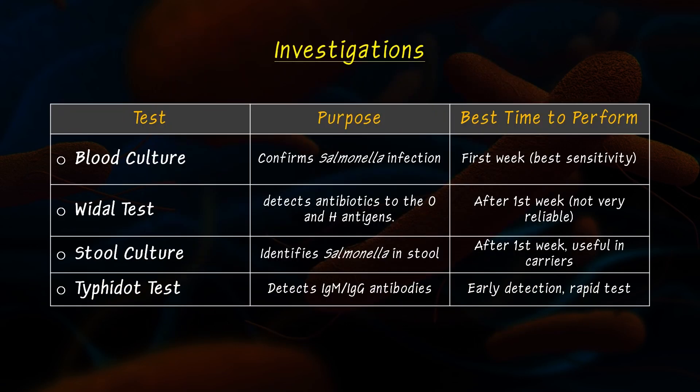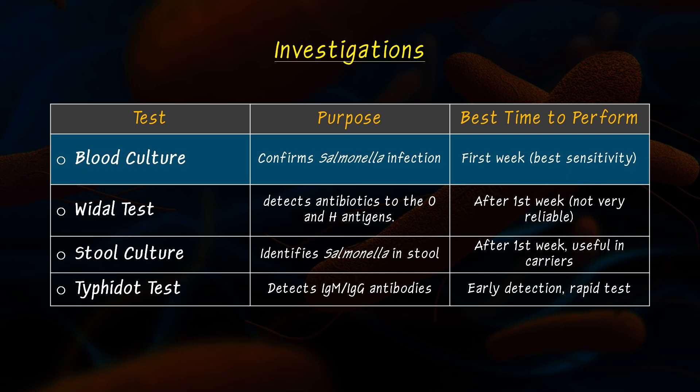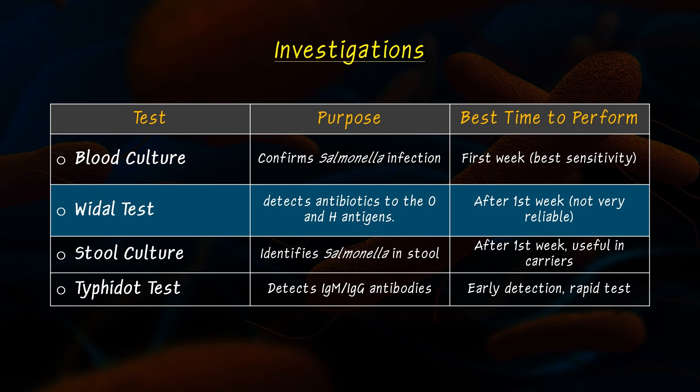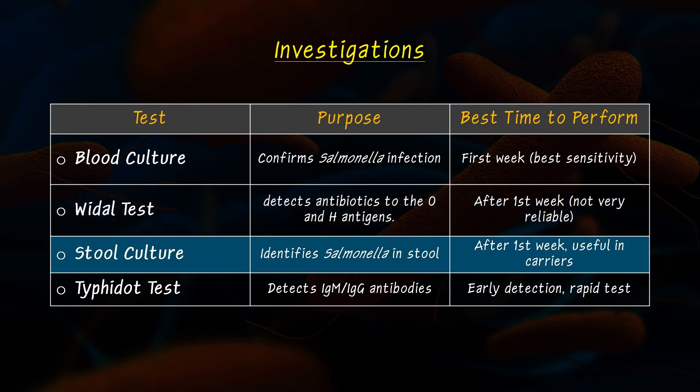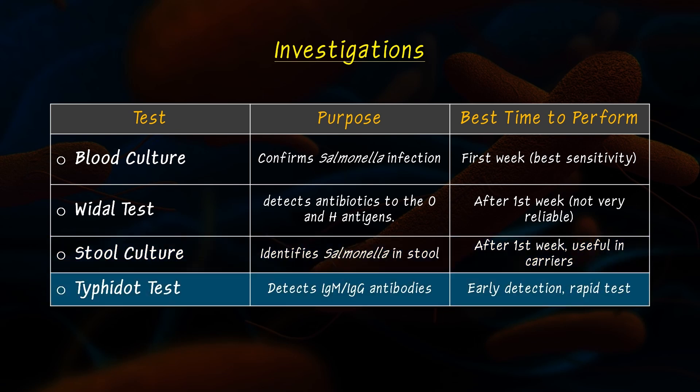Now we are going to look at investigations. First is a blood culture test, which is done in the first week to detect bacteria. Next is the Widal test, which is done after the first week and detects antibodies to the O and H antigens. We could also perform a stool culture after a week, which identifies Salmonella in stool. There is also the Typhidot test, which detects IgM or IgG antibodies and is used for early detection.